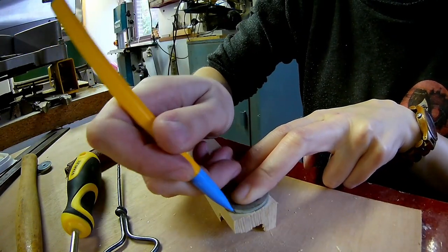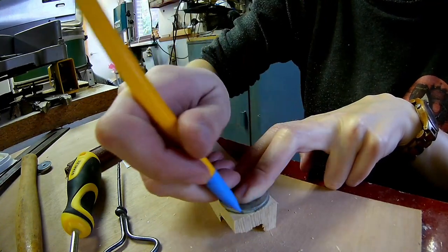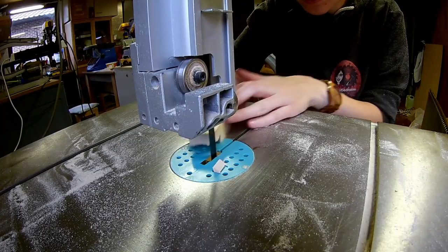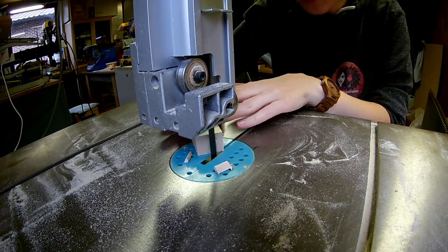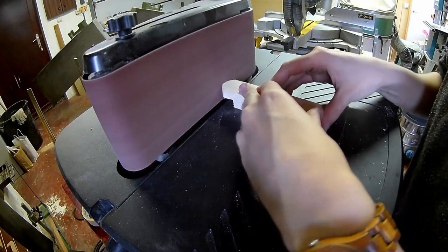Round over all the corners. Sand it smooth on the belt sander.